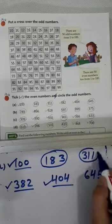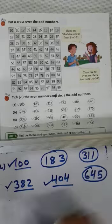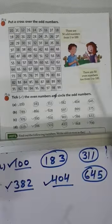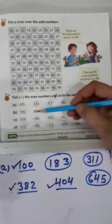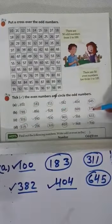Circle the odd number. This is an even number. B, C, D. Even number tick. And odd number is circled.